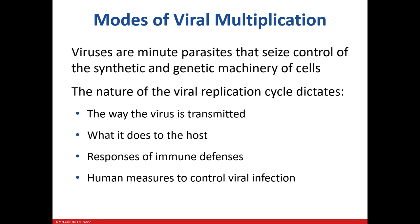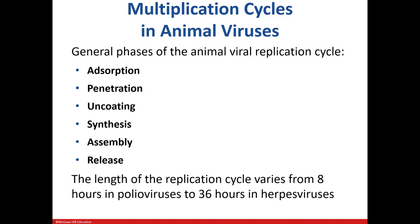The way that a virus gains control of the host and replicates determines how it's transmitted, what type of damage it does to the host, how our immune system responds, and how we control the spread of them. We're about to get into how viruses replicate in an animal cell. All viruses are different in terms of how long it takes from adsorption to release. It could be 8 hours as in poliovirus, or 36 hours in some of the herpes viruses.